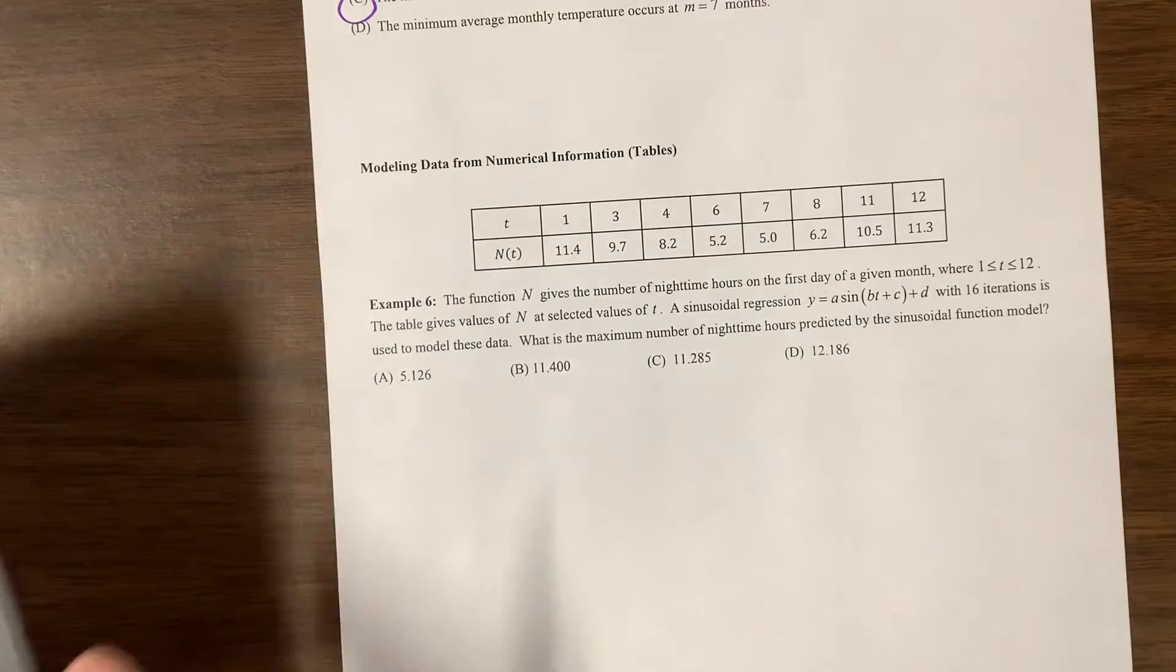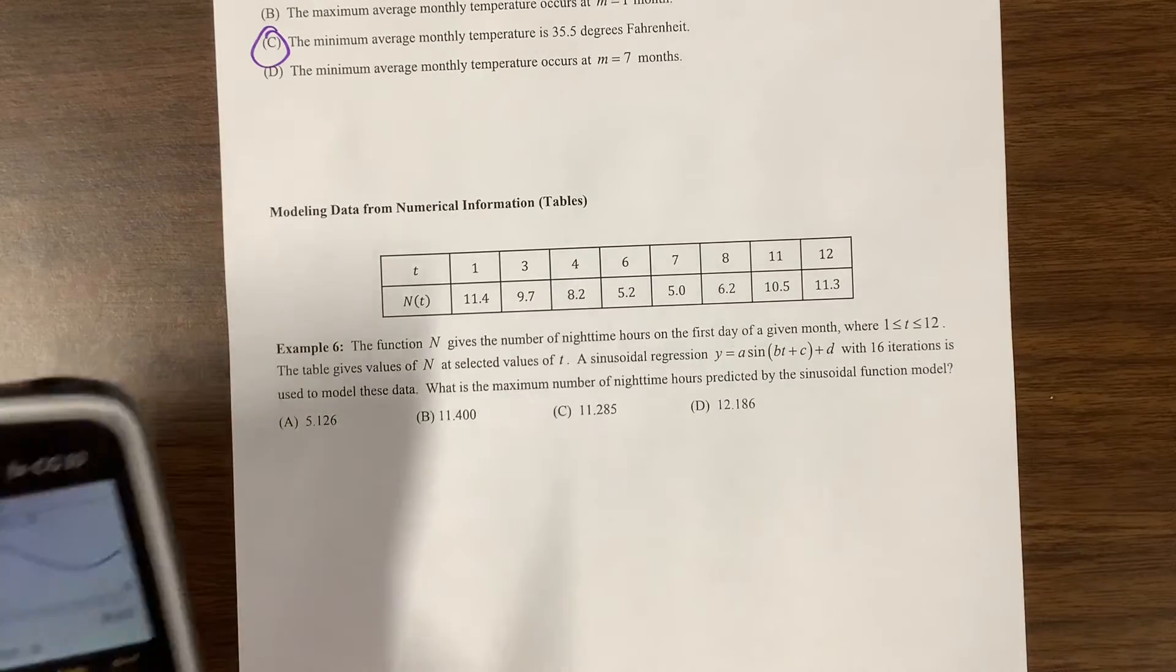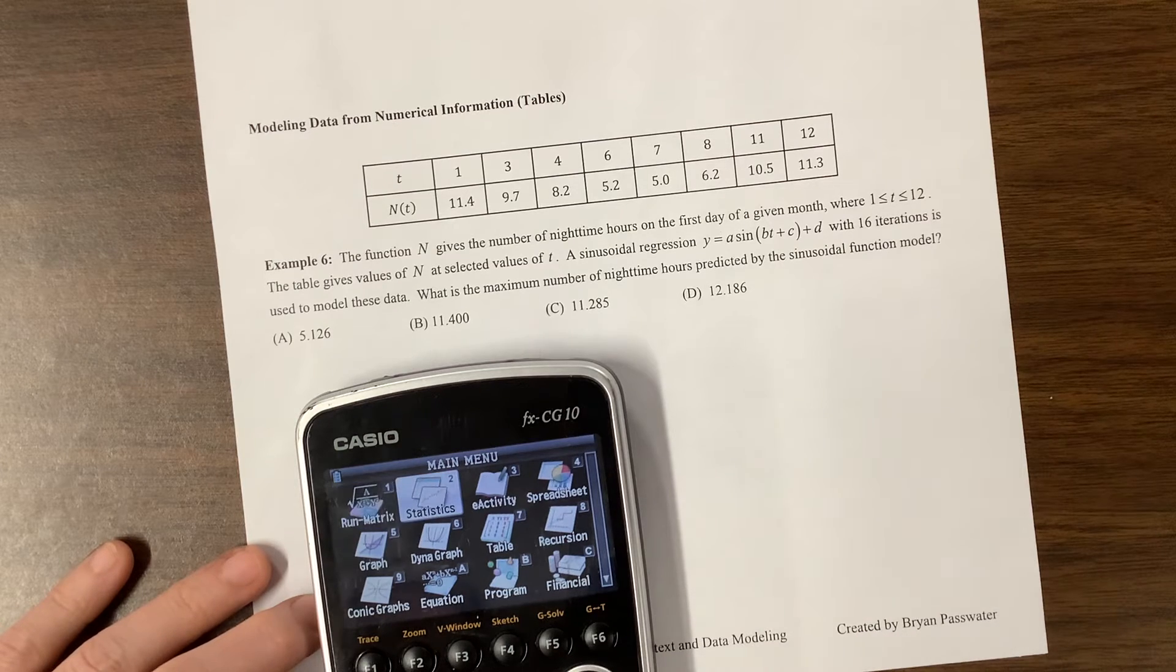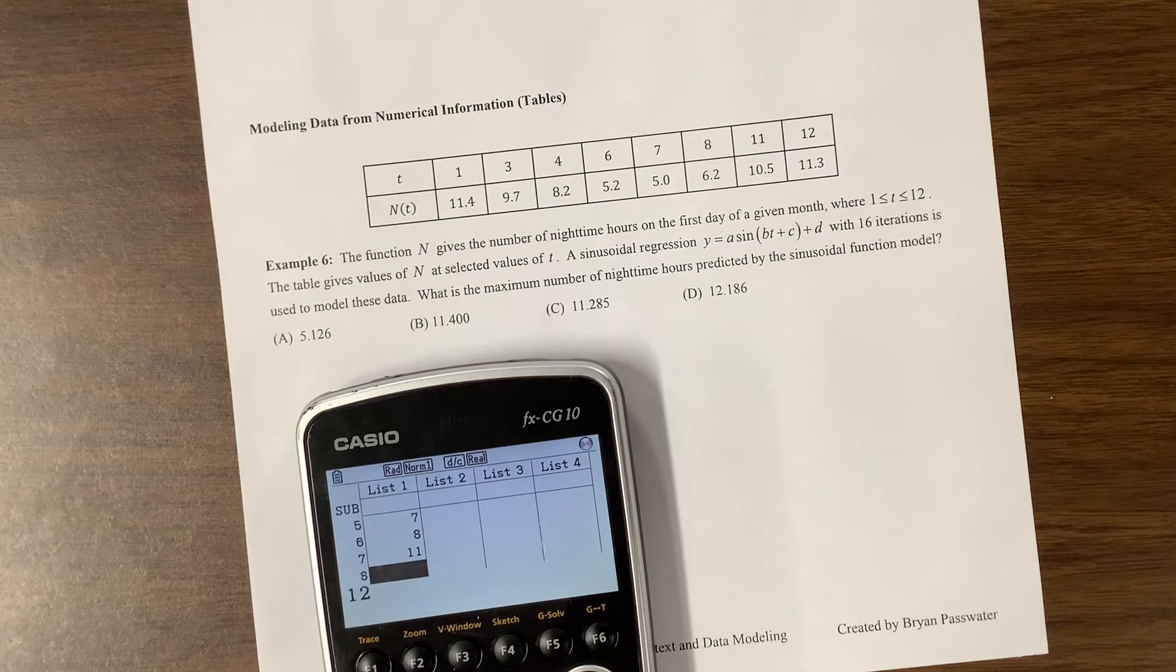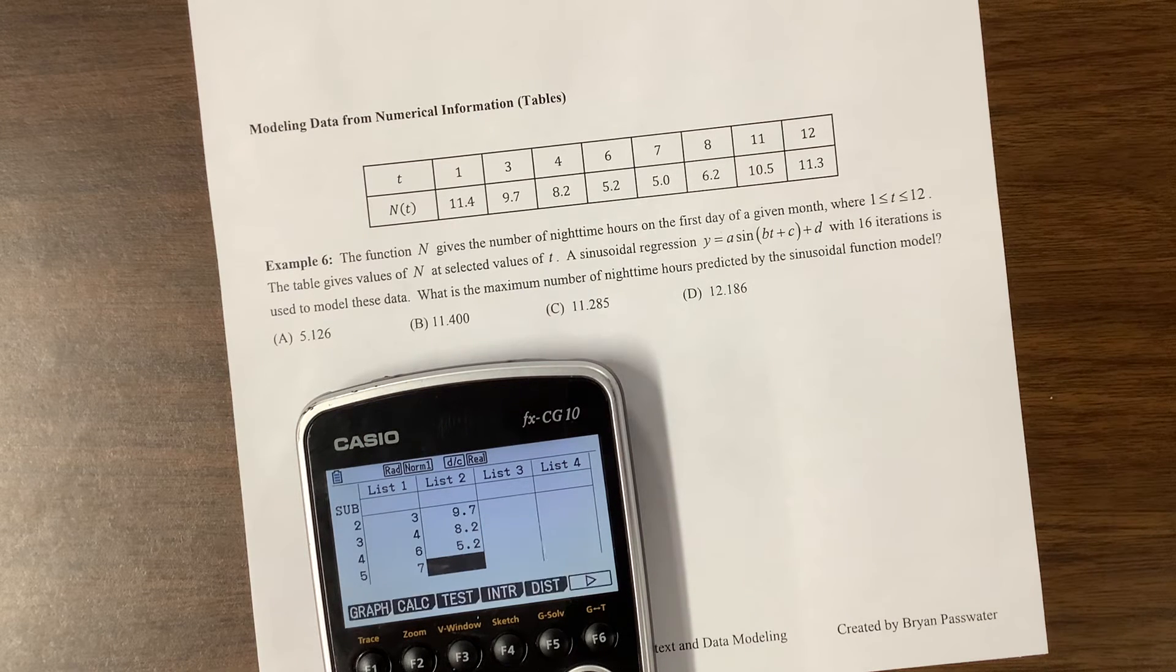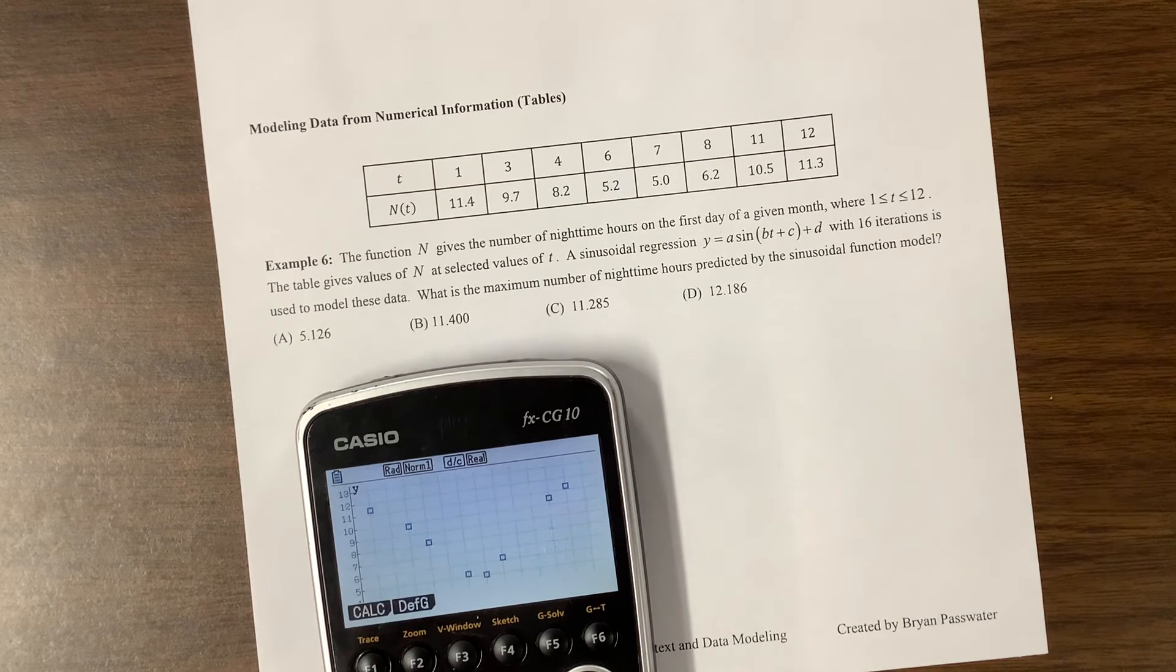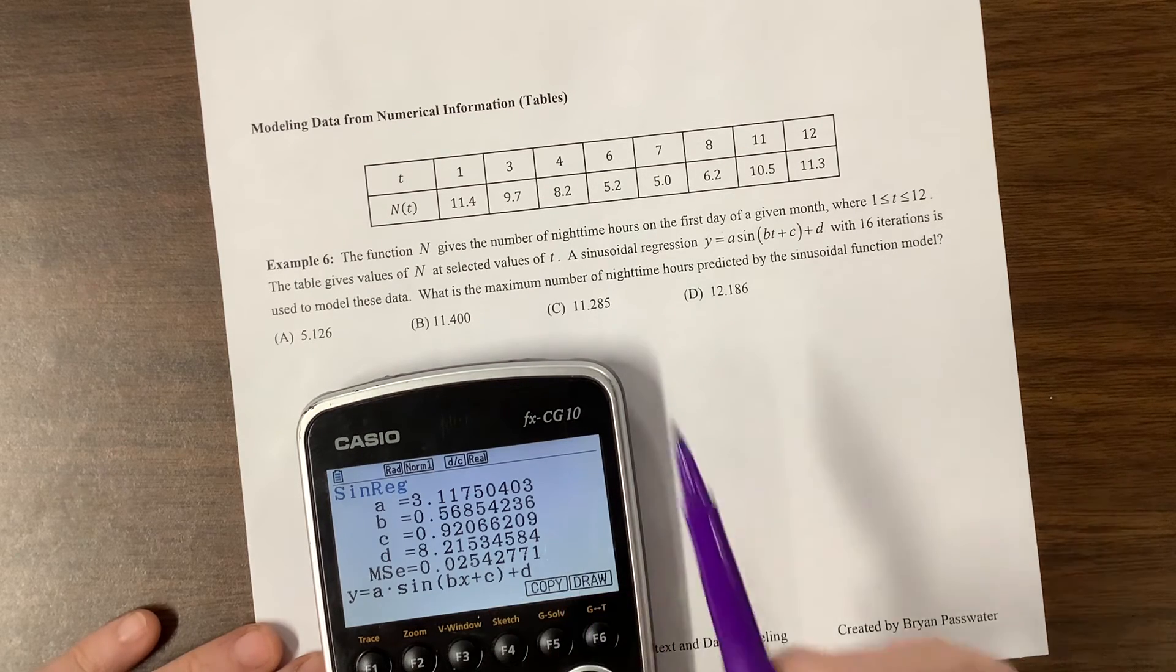The number N gives the number of nighttime hours for the first day of the month, the given month. So here we have a sinusoidal regression with 16 iterations is used to model this data. I don't know what it means that about 16 iterations. Let's see if we can do it anyway. I don't know if they're wanting us to do like multiple. Comment below. Tell me something interesting about your life. So once I have those, then my calculator will find that for me pretty easily. Here's those points. And then I can calculate the regression. So I hit sine. Here's my equation.